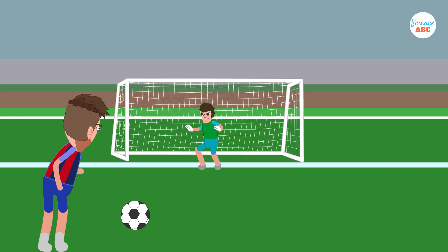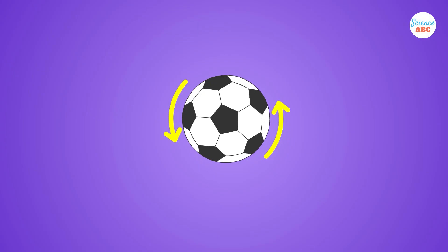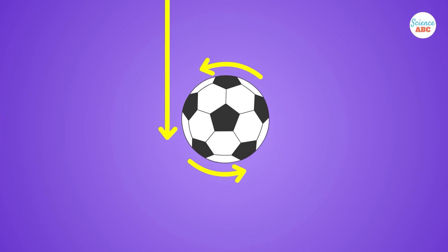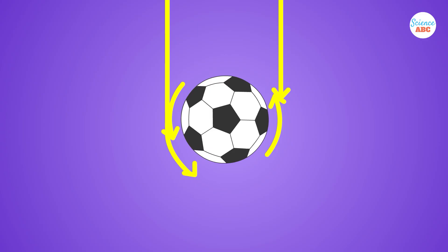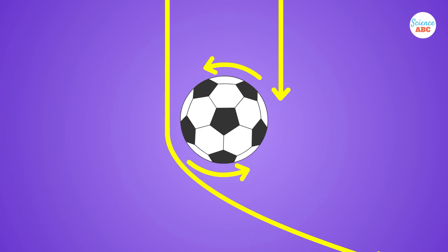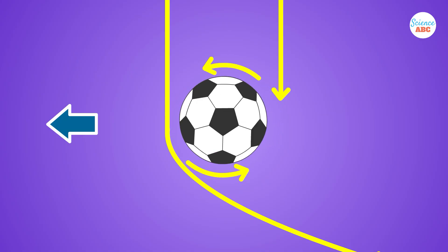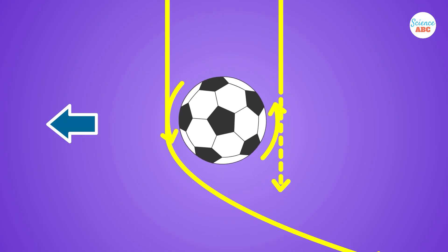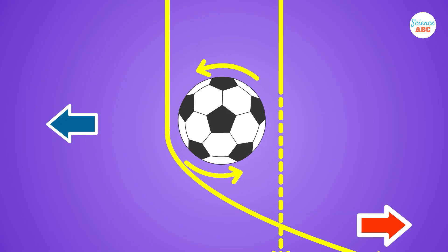Take the example of a soccer ball. When a spinning ball flies through the air, one side of the ball moves in the same direction as the airflow, while the other side moves against it. The side going with the airflow pulls the air along its surface due to friction. This alignment increases the speed of the air on this side. Conversely, on the side of the ball that moves against the airflow, the speed of the air is reduced.